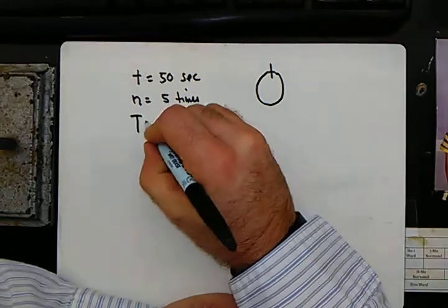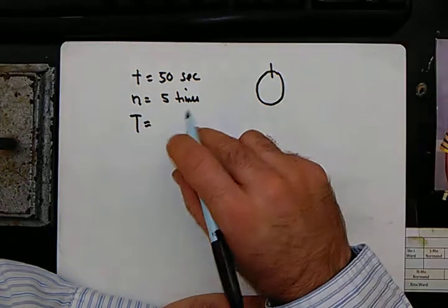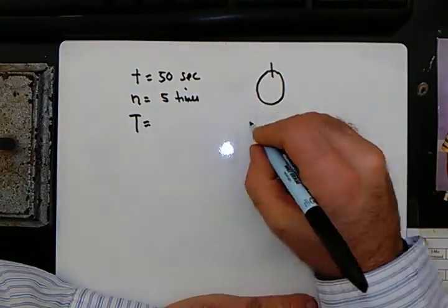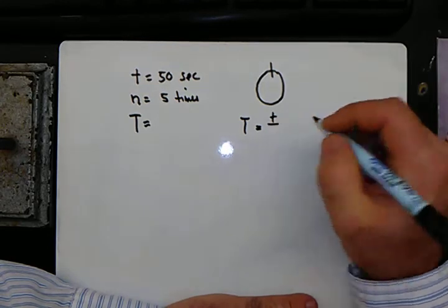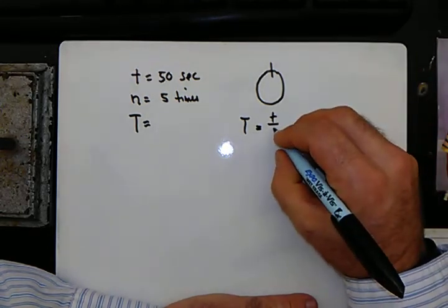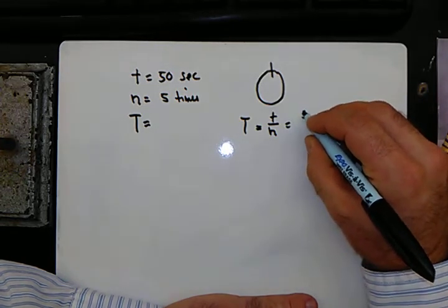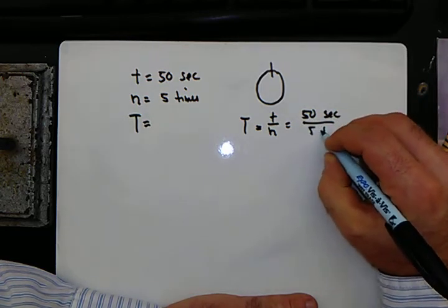So the question is, what is the period of its motion? This is simple because we know that the period equals the time it takes divided by the number of times. So the period in this case would be 50 seconds over five times.